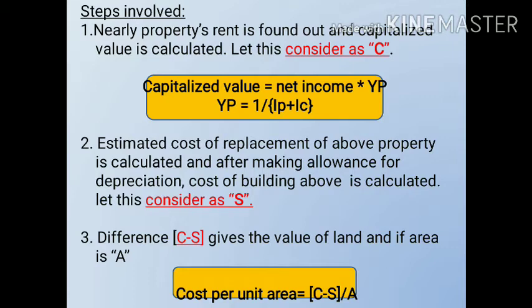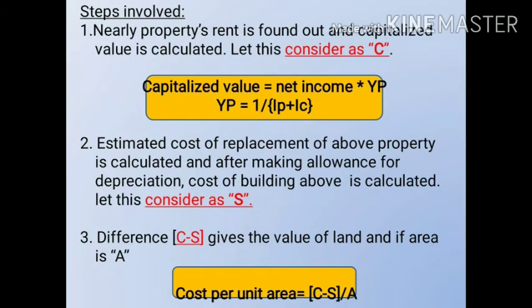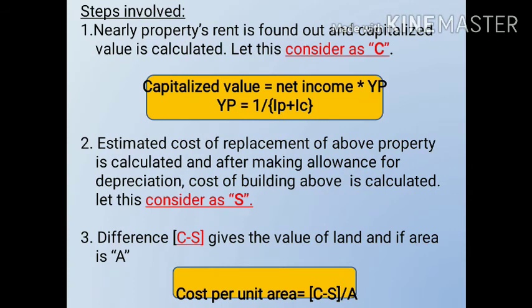We know that if there is a piece of land with a building on it, the total value will comprise of building value plus land value. We have to calculate the land value here. So whatever the total value is, we minus the building value, and we will get the land value. How can we find out the building value? We use the detailed estimate — we calculate the original construction cost, then minus the yearly depreciation, and we get the building value, which is considered as S. The difference C minus S gives the value of the land. And if the area is A, then the cost per unit area is C minus S divided by A.